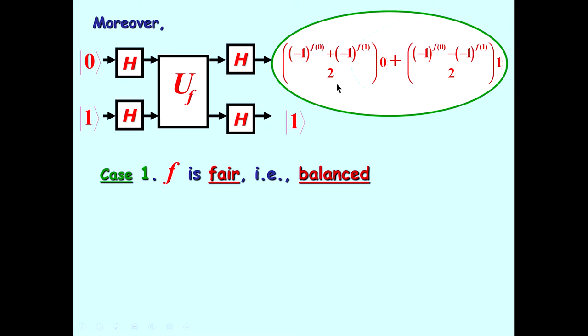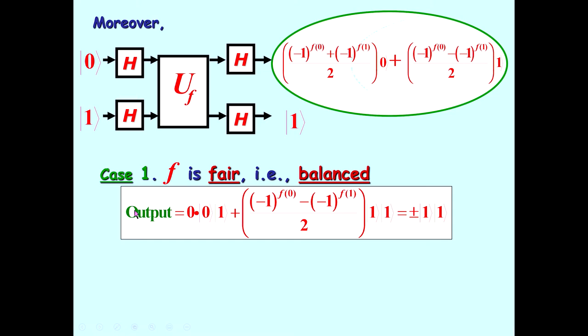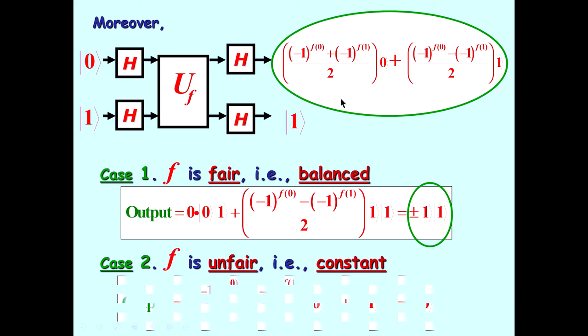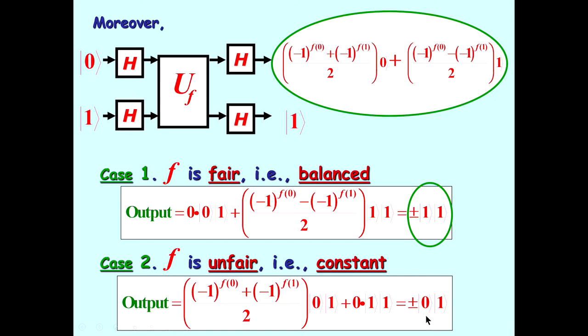I should mention, if F is a fair coin and balanced, then in measurement, the left term drops out, and it's simply a ket one-one. We measure the first to know that it's balanced. If it's an unfair coin, that is constant. Then upon measurement, we measure a zero, and thereby know that it is an unfair coin. So that's a brief review.